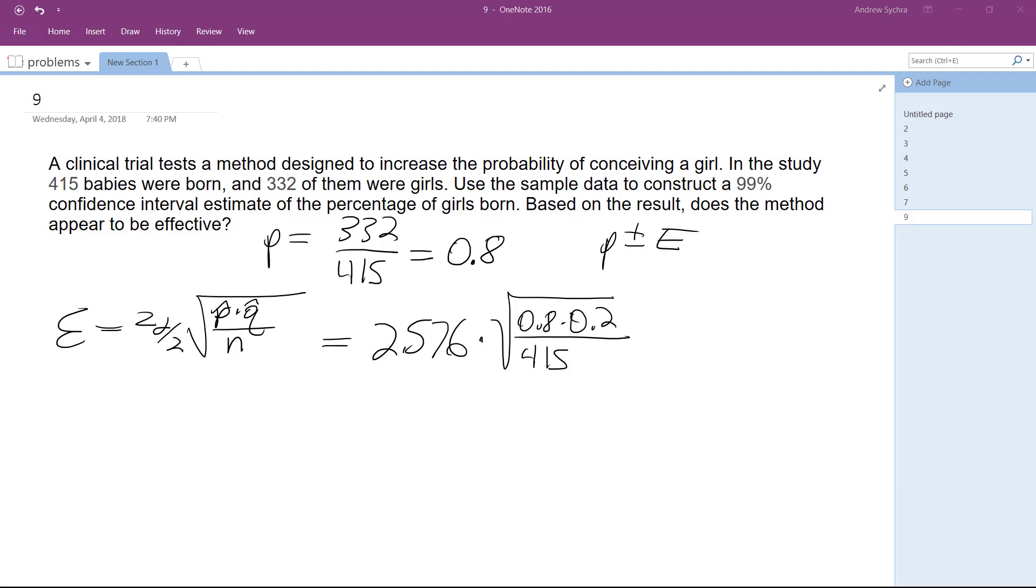What we get, rounding to 4 decimal places, is 0.0506.